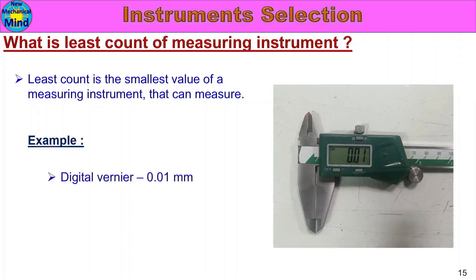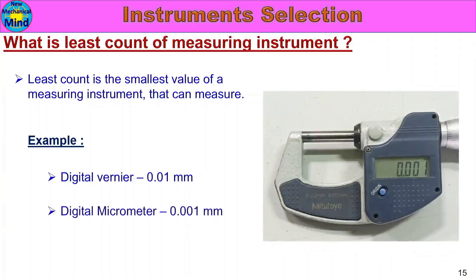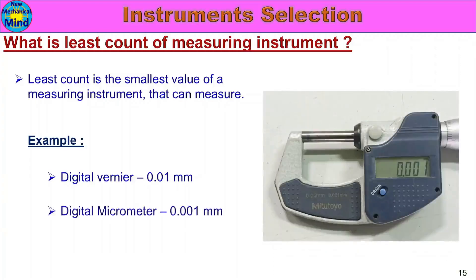For example, a digital vernier caliper has a least count of 0.01 mm, and a digital micrometer has a least count of 0.001 mm. For example, one micron is as thin as a polythene cover sheet. For all measuring instruments, we have a least count.